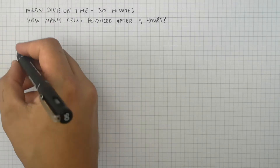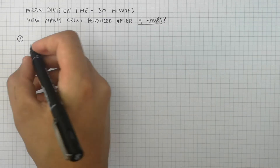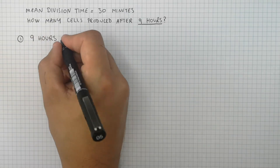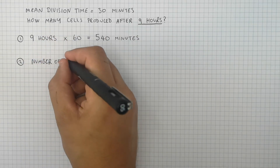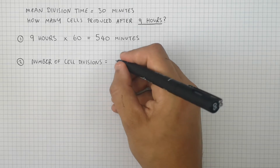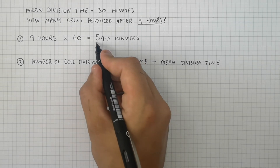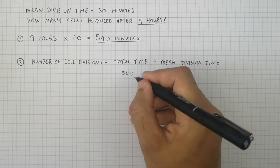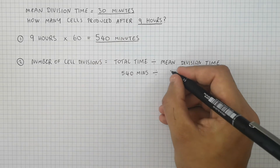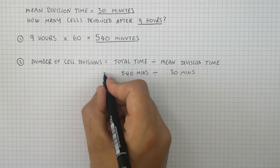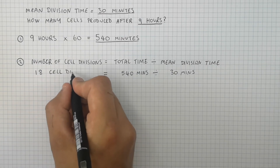So the mean division time for this bacterial cell is 30 minutes. We want to work out how many cells are produced after 9 hours. So you convert 9 hours to minutes: 9 hours times 60 gives you 540 minutes. The next step is to calculate the number of cell divisions. Number of cell divisions equals the total time divided by the mean division time. So 540 minutes divided by 30 minutes gives you 18 cell divisions.